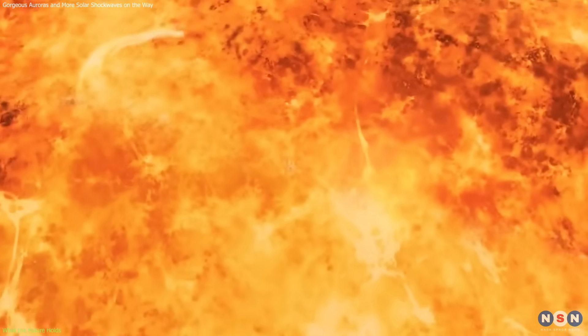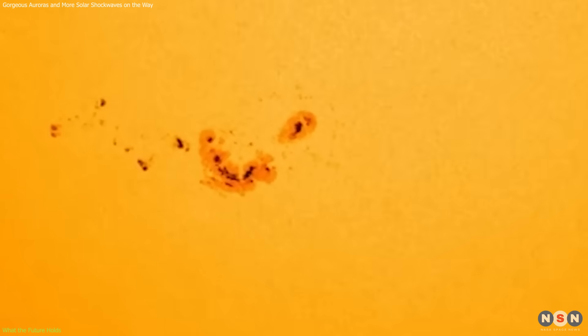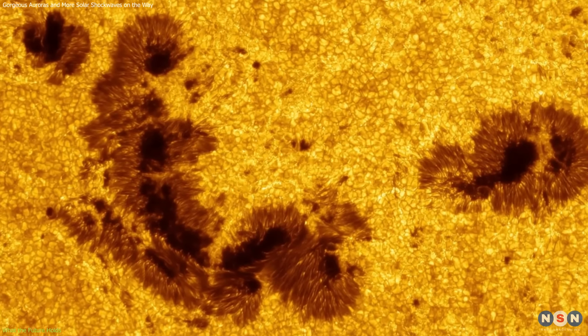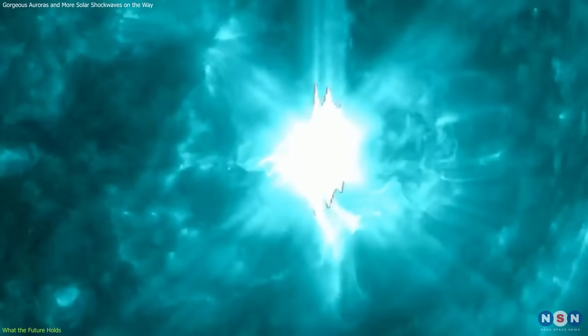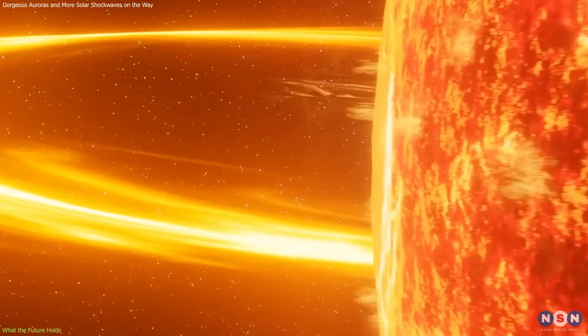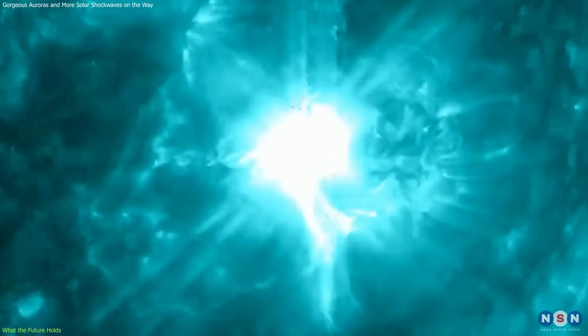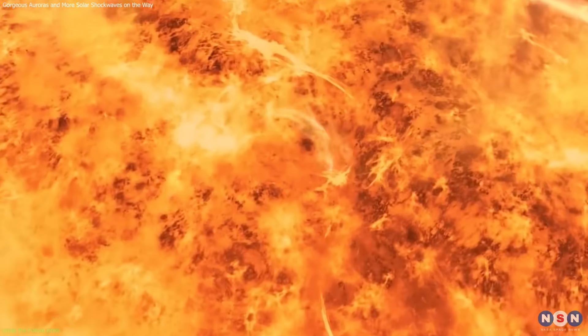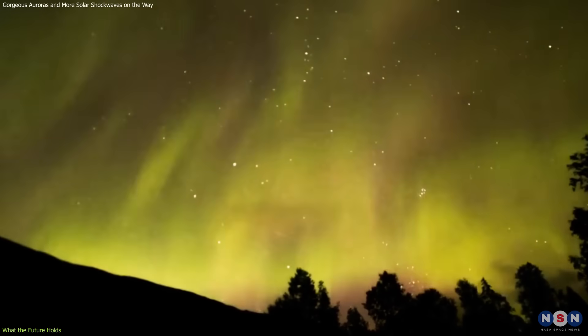Currently, we are witnessing significant solar activity marked by one of the largest sunspot groups in recent history—Active Region 3664. This region is not only vast, but also highly active, launching clouds of particles into the solar system. Some of these CMEs are already impacting Earth, and others may follow. The intense activity from this sunspot is a clear indicator of the Sun's current phase in its solar cycle, suggesting we can expect an increase in the frequency and intensity of auroras.